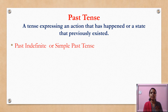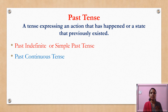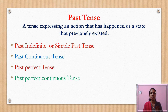Just like present tense, past tense has also been categorized into four parts. First is past indefinite or simple past tense. Second, past continuous tense. Third, past perfect tense, and the fourth, past perfect continuous tense. Let's study all these tenses one by one.